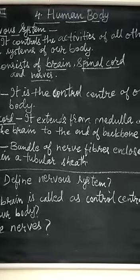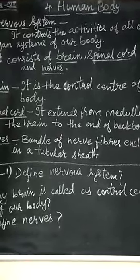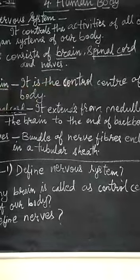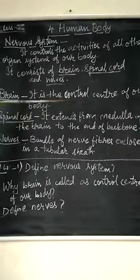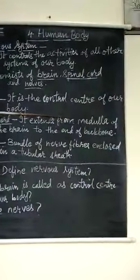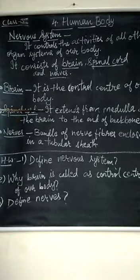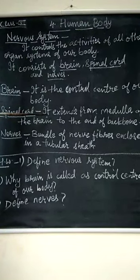The second is spinal cord. Spinal cord extends from medulla of the brain, means last part of the brain, to the end of backbone. It is also protected by a number of vertebrae like bones.